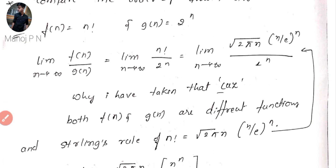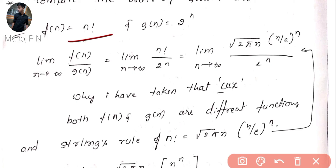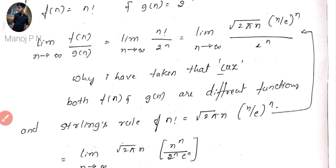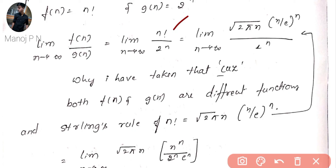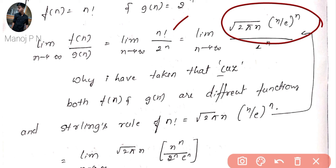By Stirling's formula, n! ≈ sqrt(2πn) · (n/e)^n. Let's apply the definition: limit n→∞ of f(n)/g(n) equals limit n→∞ of n! divided by 2^n. We replace n! with Stirling's approximation: sqrt(2πn) · (n/e)^n. This is an approximate formula from Stirling's derivation.